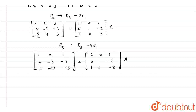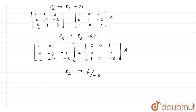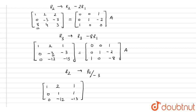The next operation we will apply is R2 = R2 ÷ (−3), because we want 1 in that position. After applying this, we get [1, 2, 1; 0, 1, 1; 0, −12, −13], equal to [0, 0, 1; 0, −1/3, 2/3; 1, 0, −8] multiplied by A.